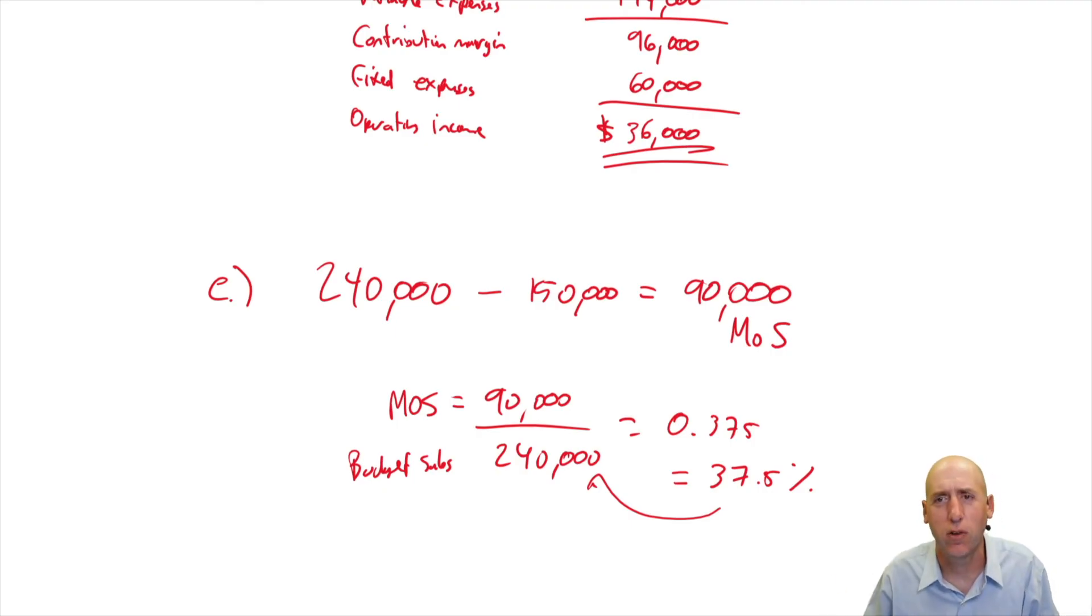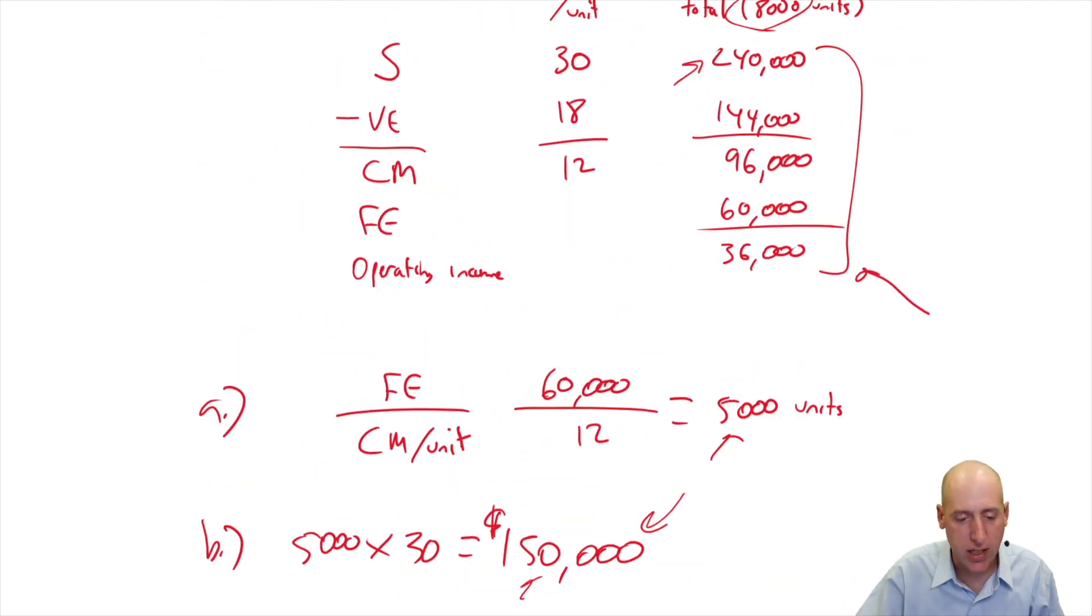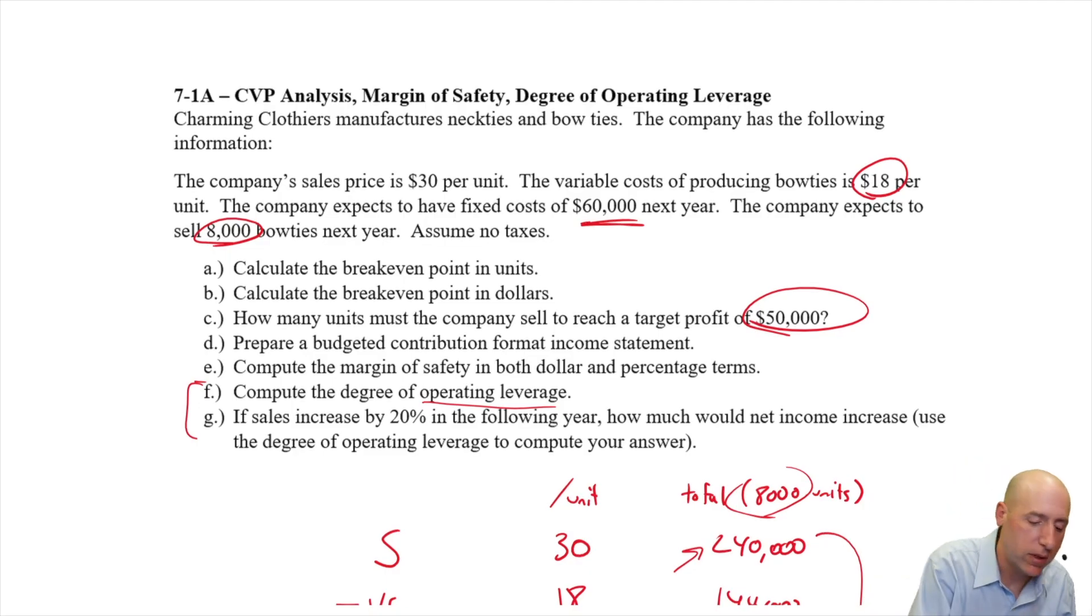Again, very useful for a small business to know kind of how much room we have to blow our budget or to miss our budget by. Okay, let's stop this video here. In our next video, we'll just continue this problem. We'll do parts F and G, the degree of operating leverage, probably the most challenging concept this chapter, but one of the most powerful and most important. Stay tuned.